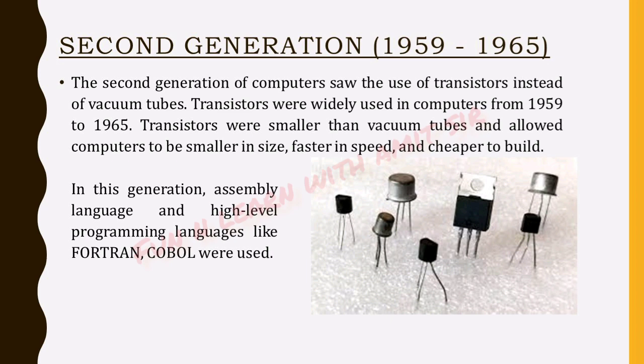The second generation of computers saw the use of transistors instead of vacuum tubes. Transistors were widely used in computers from 1959 to 1965. They were smaller than vacuum tubes and allowed computers to be smaller in size, faster in speed, and cheaper to build.